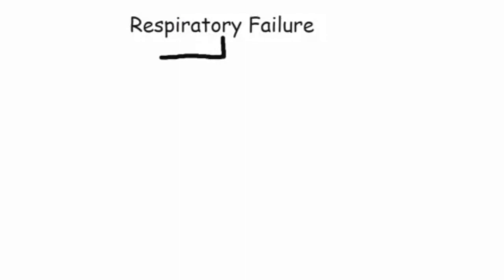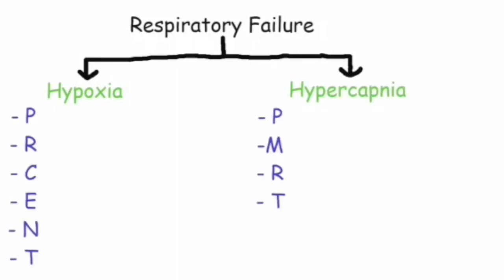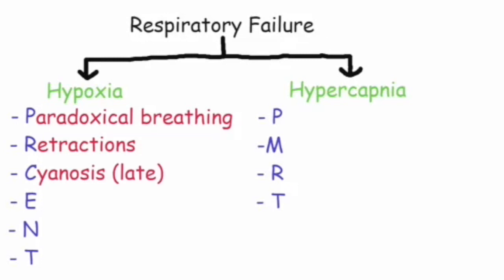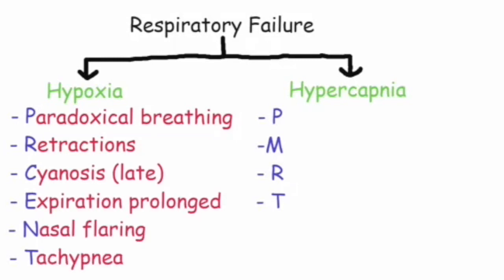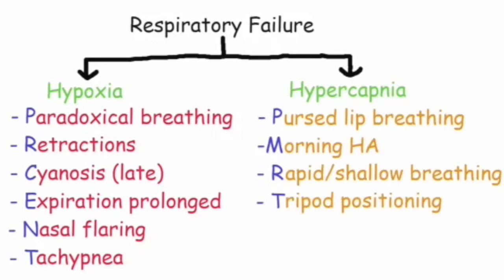The specific manifestations of hypoxic respiratory failure use the acronym PERCENT: Paradoxical breathing, Retraction, Cyanosis, Expiration prolonged, Nasal flaring, and Tachypnea. For hypercapnia, the acronym is PMRD: worsening breathing, Morning headache, Rapid and shallow breathing, and tripod positioning.